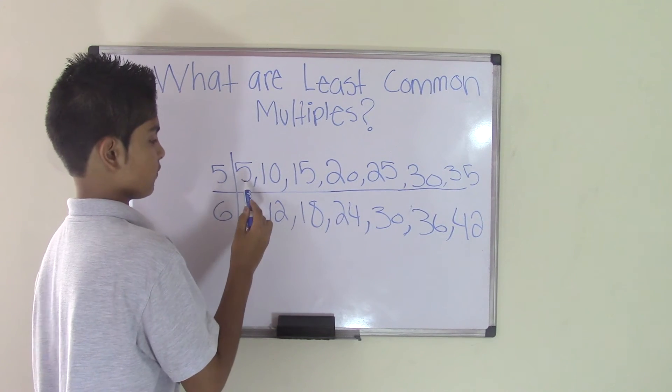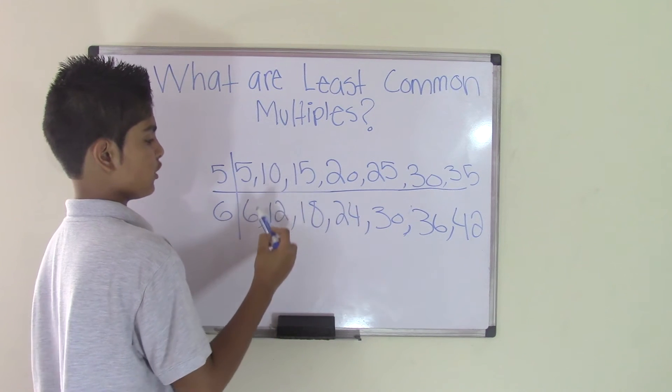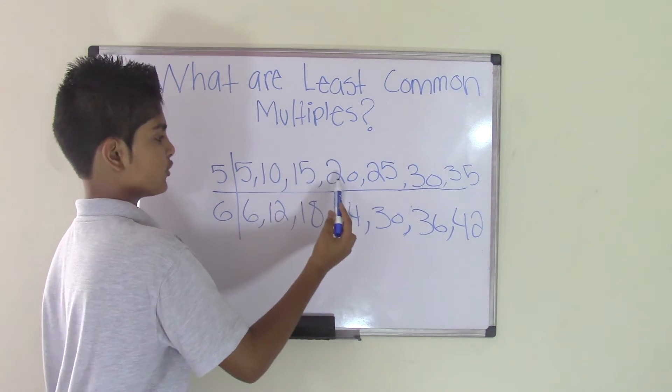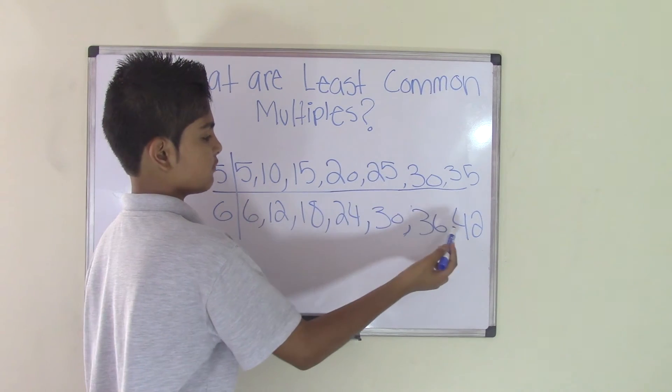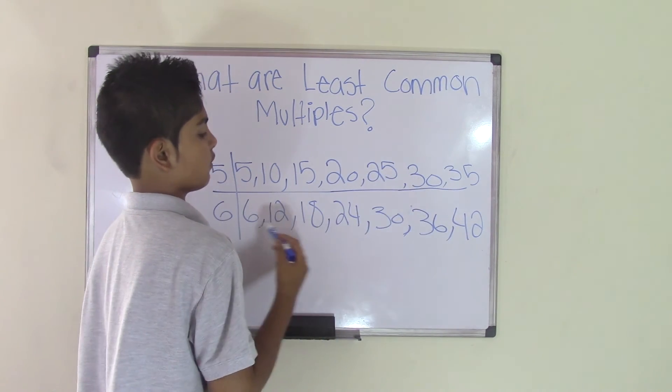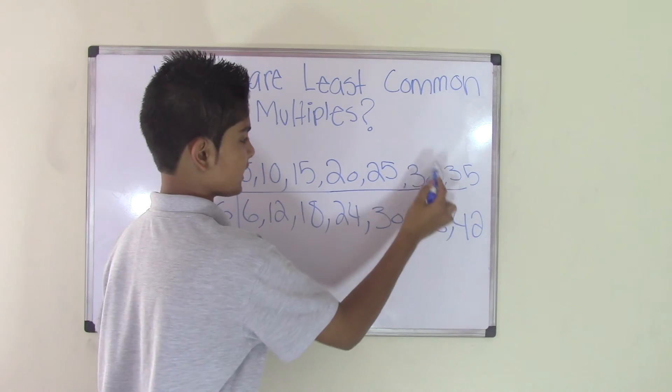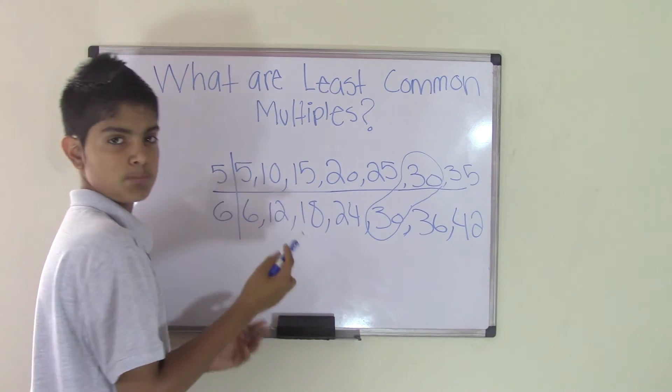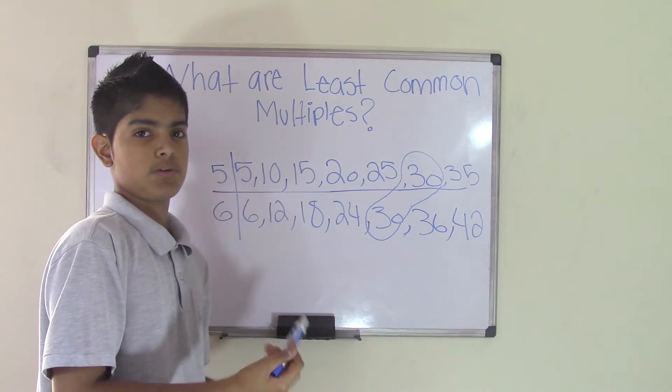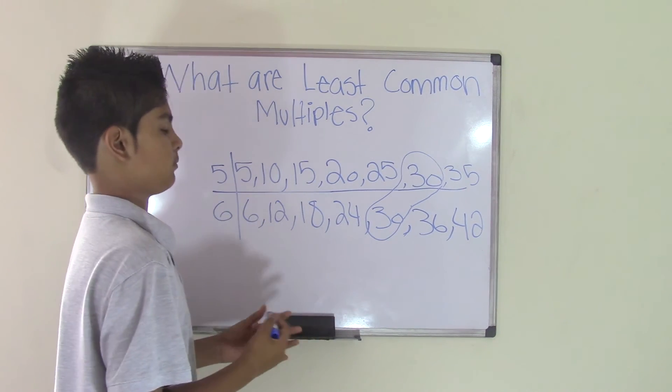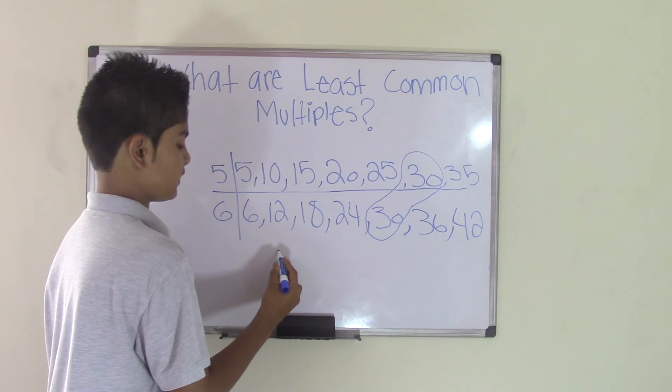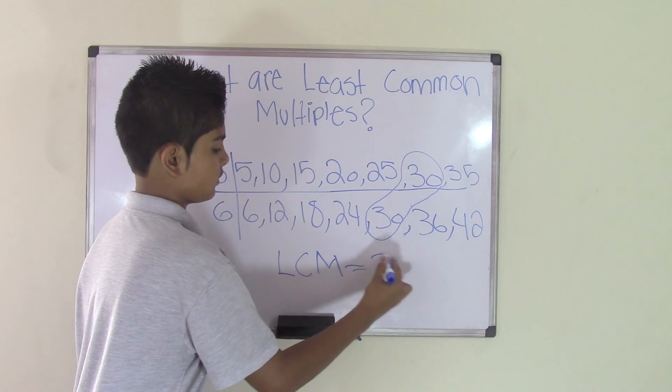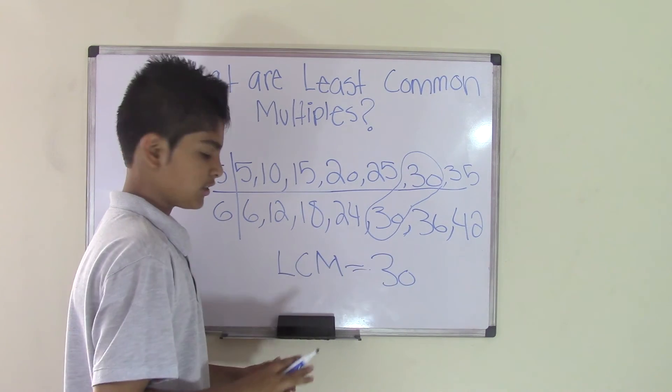5, no. 10, no, we don't have a 10 here. 15, we don't have a 15 here. 20, no. 25, no. 30. Oh wait, 30 and a 30. So this is the least common multiple. The first common multiple you find is called the least common multiple. Most of the time, you'll be asked to write your answer like this: LCM is equal to 30. Let's do another one.